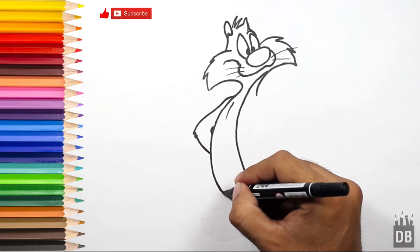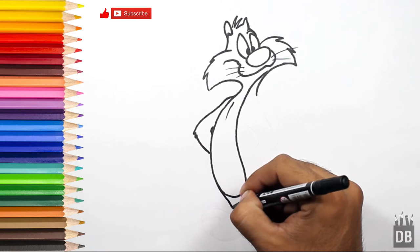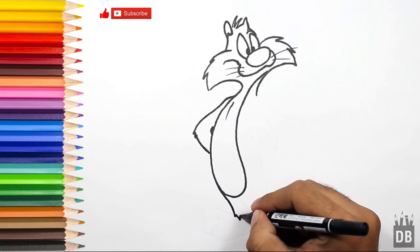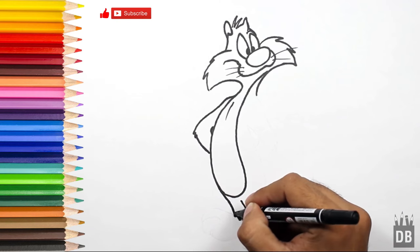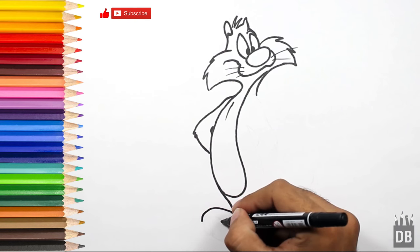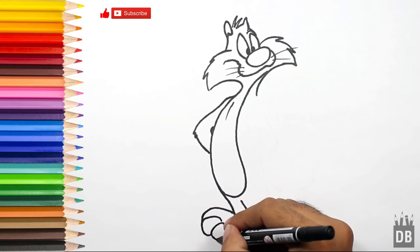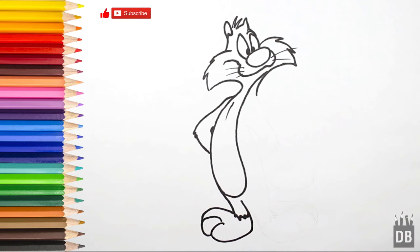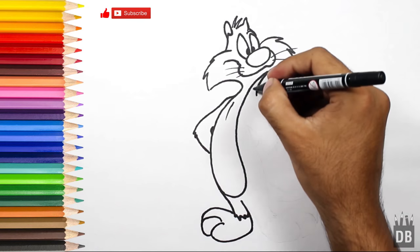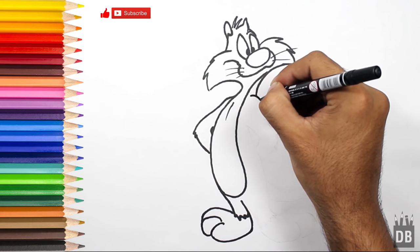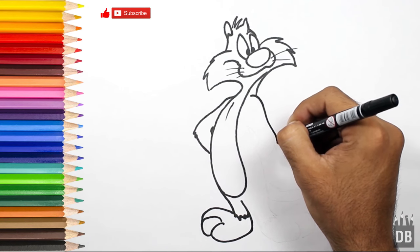And from the line, follow along to make his feet. And from here his second arm. Just see the angles—make a triangular shape here so you can get the idea.